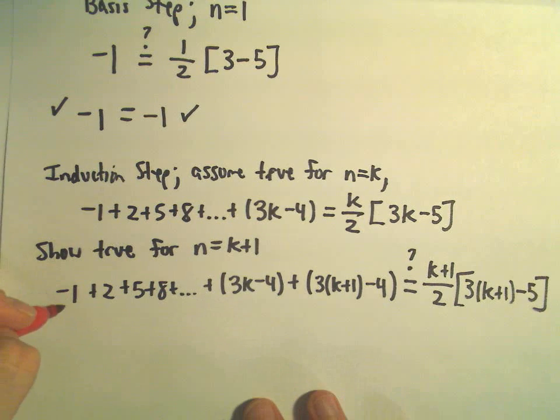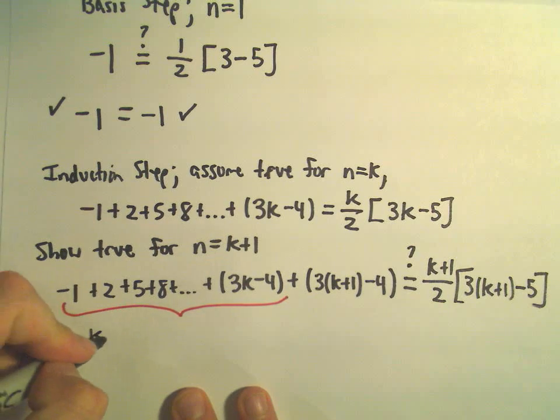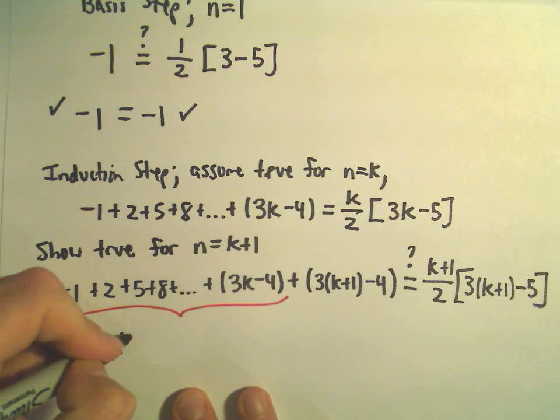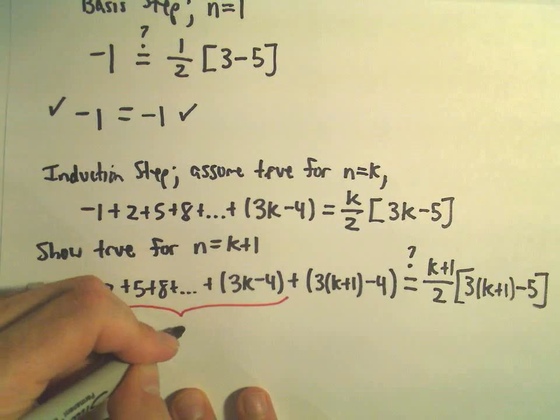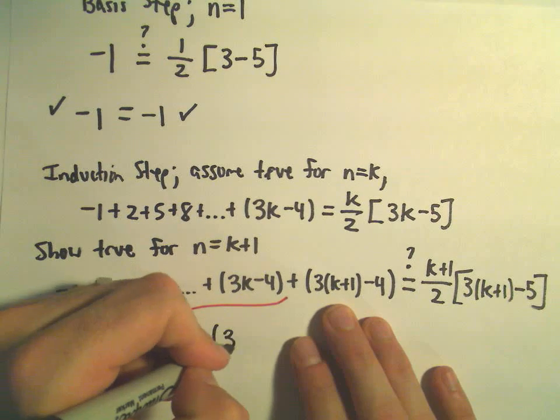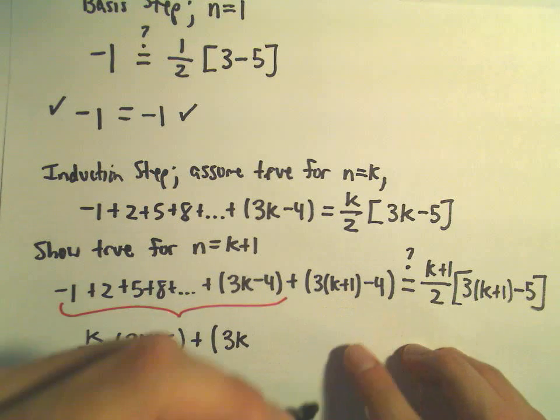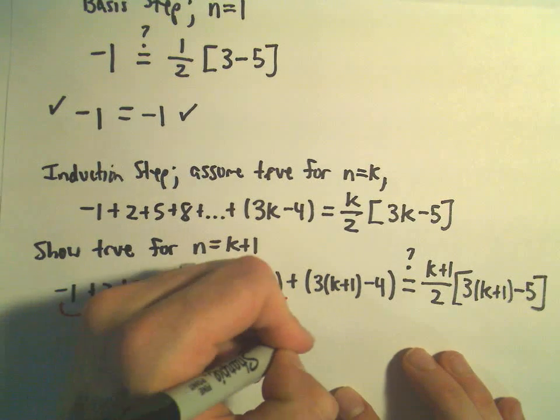Well again, by assumption, from negative 1 up to 3k minus 4, by assumption that's equal to k over 2 times 3k minus 5. If we simplify inside the parentheses, it looks like we'll have 3k plus 3 minus 4, which will be 3k minus 1.